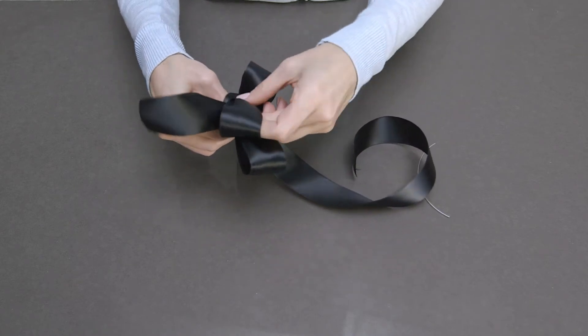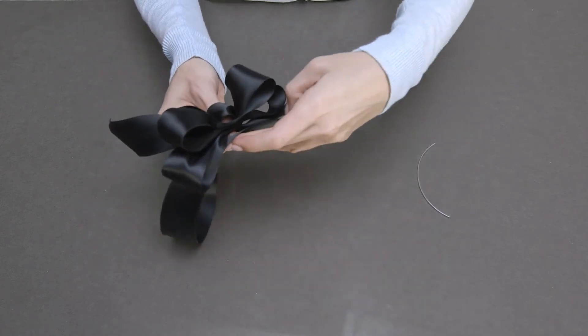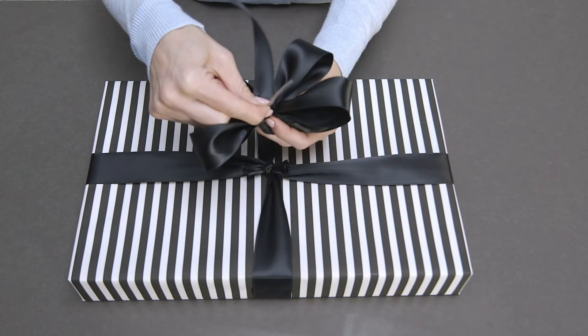When you are satisfied with the number of loops, cut the ribbon so the tails are about the same size and add a small piece of ribbon wire to secure the loops to the center of the bow.